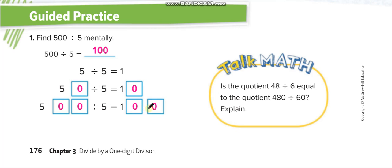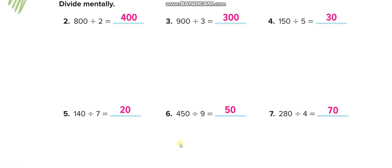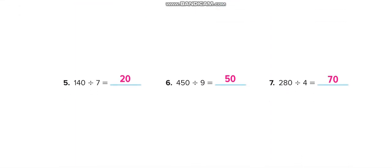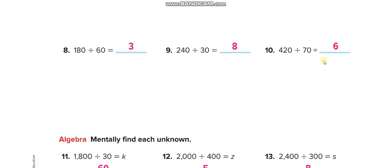In all these six questions we can't cancel any zero because there are no zeros with the second number. So we just remove the zeros, divide, and put them back — for example 8 divided by 2 is 4, then restore the zeros. In the next three questions we can cancel one zero because both numbers each have one zero: 180 divided by 6 is 30 (cancel zeros); 240 divided by 3 is 80; 420 divided by 7 is 60.